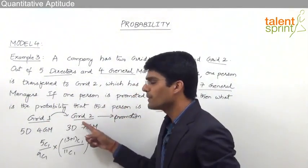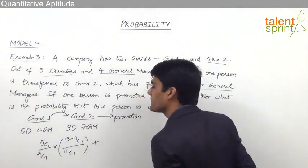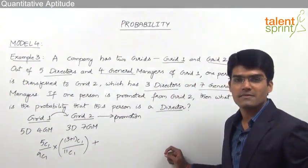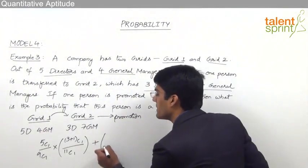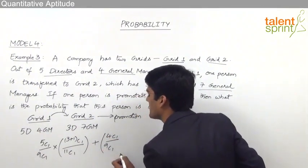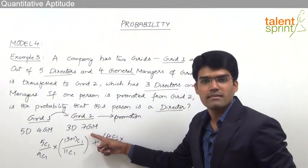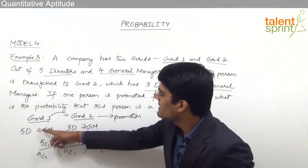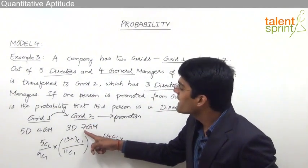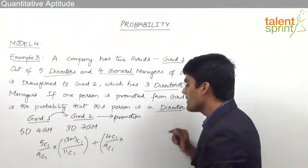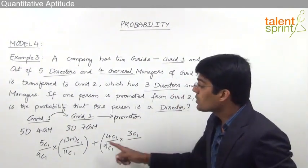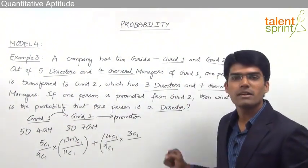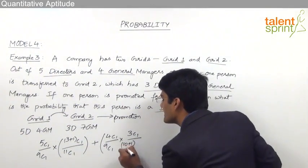For Case 2 — a general manager is transferred: the probability is 4C1 by 9C1, since there are 4 general managers out of 9 persons in Grid 1. After transferring the general manager, Grid 2 still has only 3 directors but now 11 total persons. So the probability of promoting a director is 3C1 by 11C1.